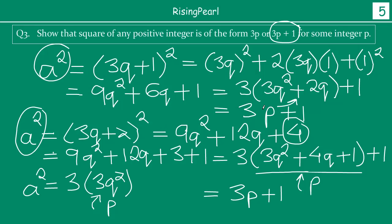Summarizing: in Case 1, P = 3Q²; in Case 2, P = 3Q² + 2Q; in Case 3, P = 3Q² + 4Q + 1. In each case, the value of P depends solely on Q. So in all three cases we can say A² is definitely of the form 3P or 3P + 1, where P is any integer.